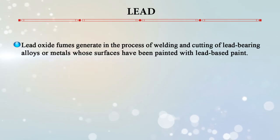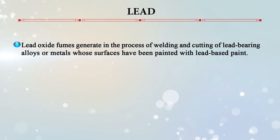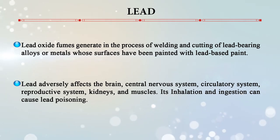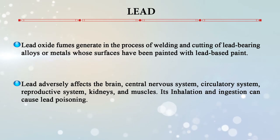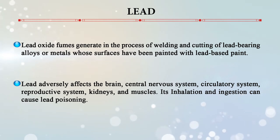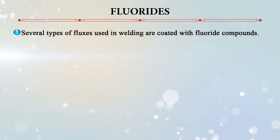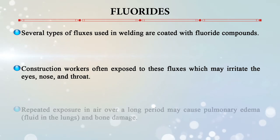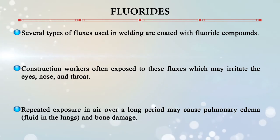Lead oxide fumes are generated in the process of welding and cutting of lead-bearing alloys or metals whose surfaces have been painted with lead-based paint. Lead adversely affects the human brain, central nervous system (CNS), circulatory system, reproductive system, kidneys, and muscles. Inhalation or ingestion can cause lead poisoning. Various types of fluxes used in welding are coated with fluoride compounds. Construction workers exposed to these fluxes may suffer eye, nose, and throat irritation, and repeated long-term exposure can cause pulmonary edema and bone damage.